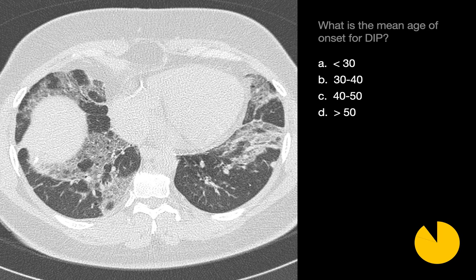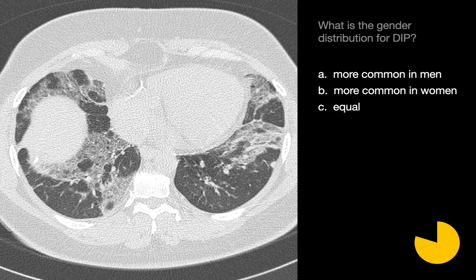What's the mean age of onset for DIP? The mean age of onset for DIP is people 30 to 40 years of age. Next question — what's the gender distribution? DIP is more common in men than in women.